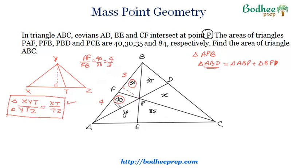Again, the area of triangle ABD is 30 plus 40, which is 70, and the area of triangle BPD is 35. So with the same logic, I can say that the ratio AP over PD will be 70 by 35, or 2 is to 1.